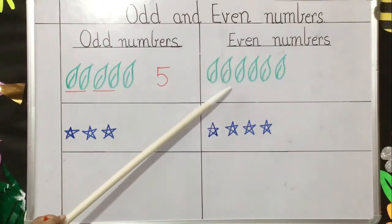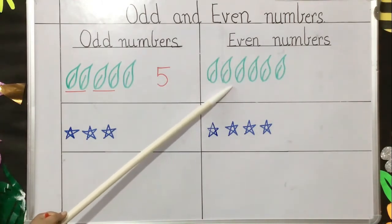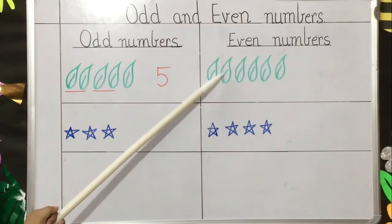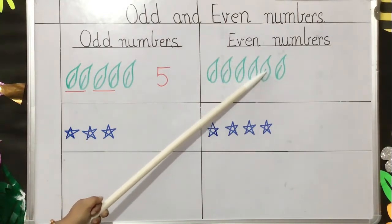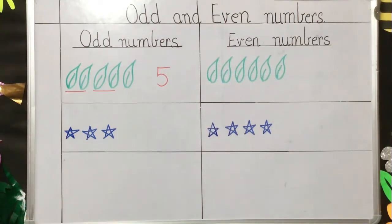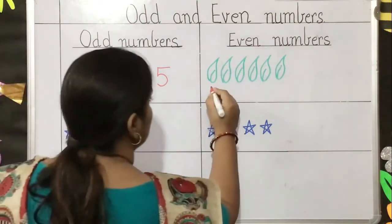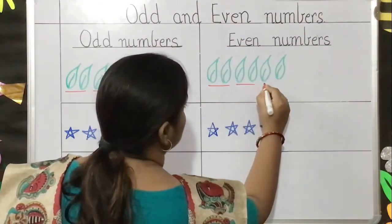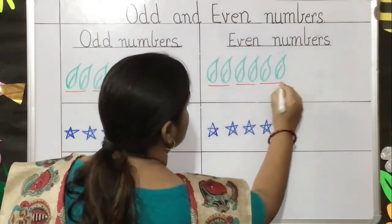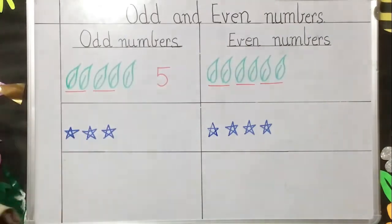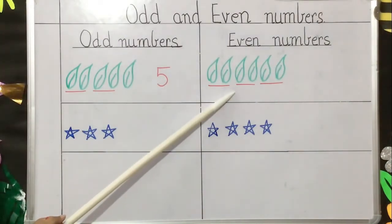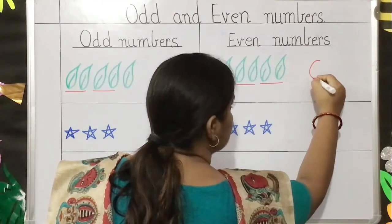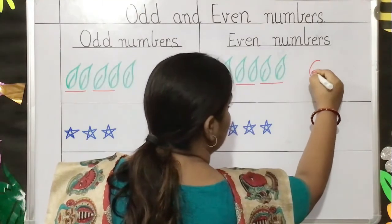Now let us see — here I have drawn six leaves: one, two, three, four, five, six. Let us group them in twos. First group, second group, third group. So this can be grouped in twos, and the number six is an even number.